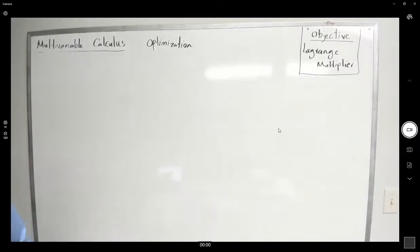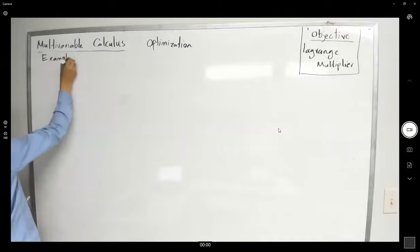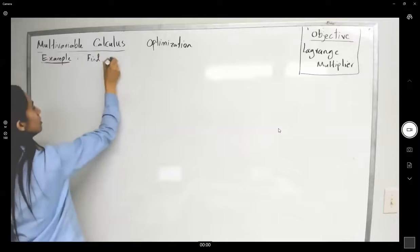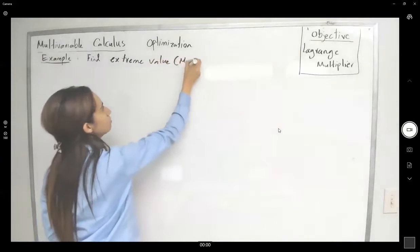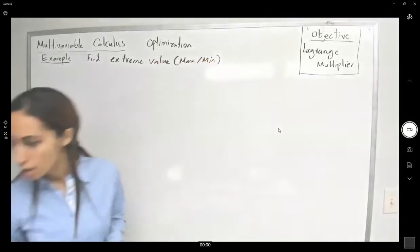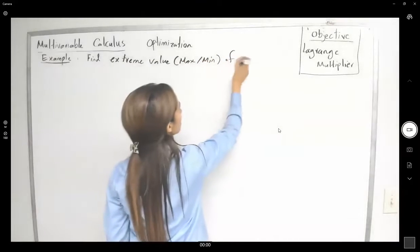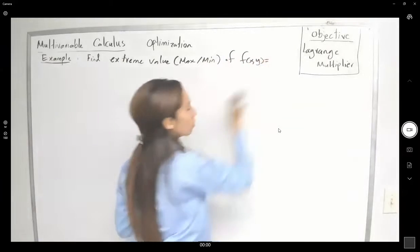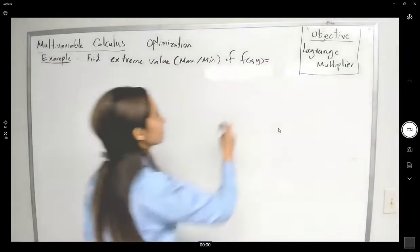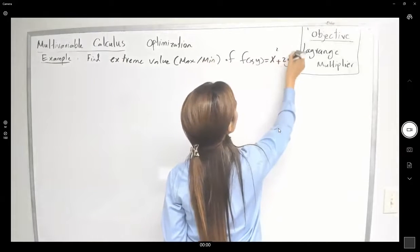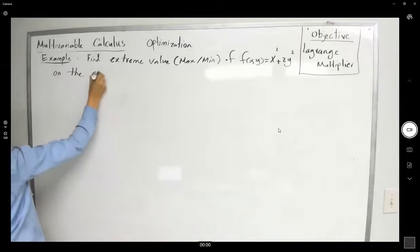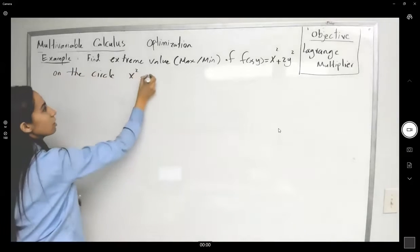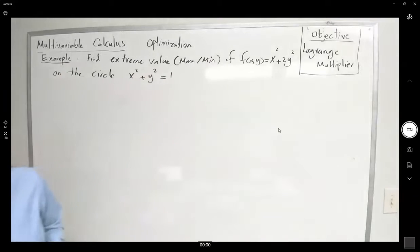This example says: find extreme values — maximum and minimum — of a function f(x, y) = x² + 2y², subject to the constraint x² + y² = 1.